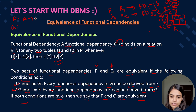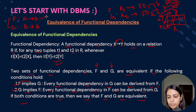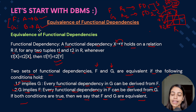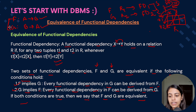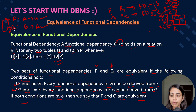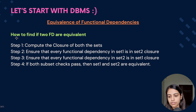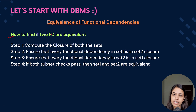Consider two relations F and G with some functional dependencies — say F has A determines B, and G has B determines A. In checking equivalence, we first see if F can cover G, then if G can cover F. If both hold true, we say they are equivalent. We will understand this more clearly from an example.